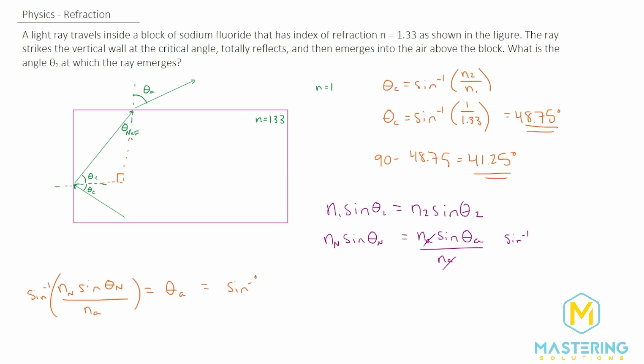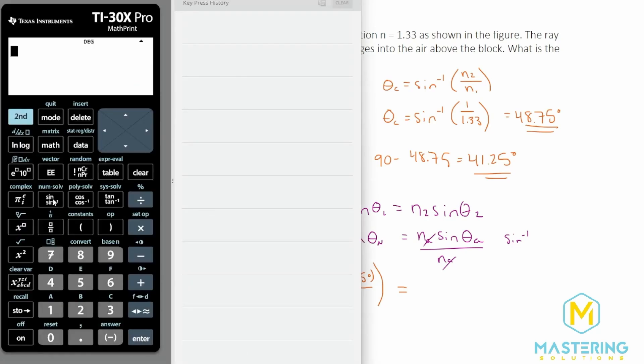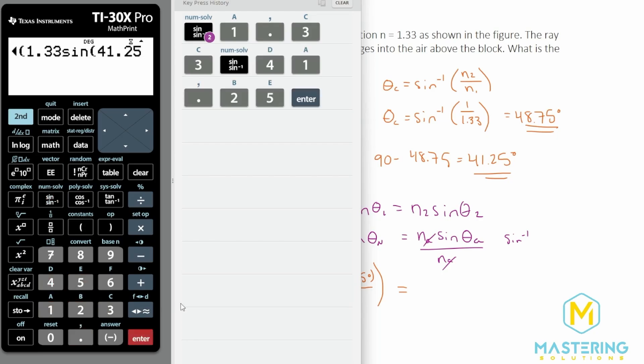So we have the inverse sine and then we have 1.33 sine. And then 41.25 was the degrees that we found. All that's over one. And that will be equal to inverse sine 1.33. I'm not going to put it over one since obviously it's not necessary. And so that gives us 61 point, we'll round that to three.